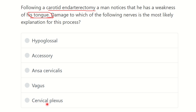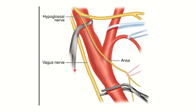Now look at the picture of the carotid endarterectomy. Here is the common carotid artery, and this is the internal and external carotid artery. The endarterectomy is done by clamping — here is the upper clamp and here is the lower clamp. We can see different nerves present in this area.